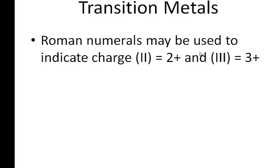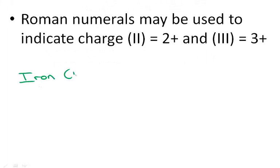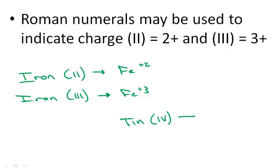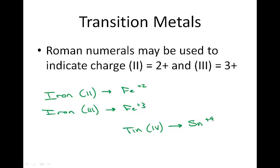What we'll see is those ones, twos, threes, fours, Roman numerals are going to be used to indicate the charge of the ion. For example, we saw iron two, and that was an iron with a positive two charge. This is different from iron three, which will result in a positive three charge. So what do you think the charge of a tin four ion would be? Sn positive four.